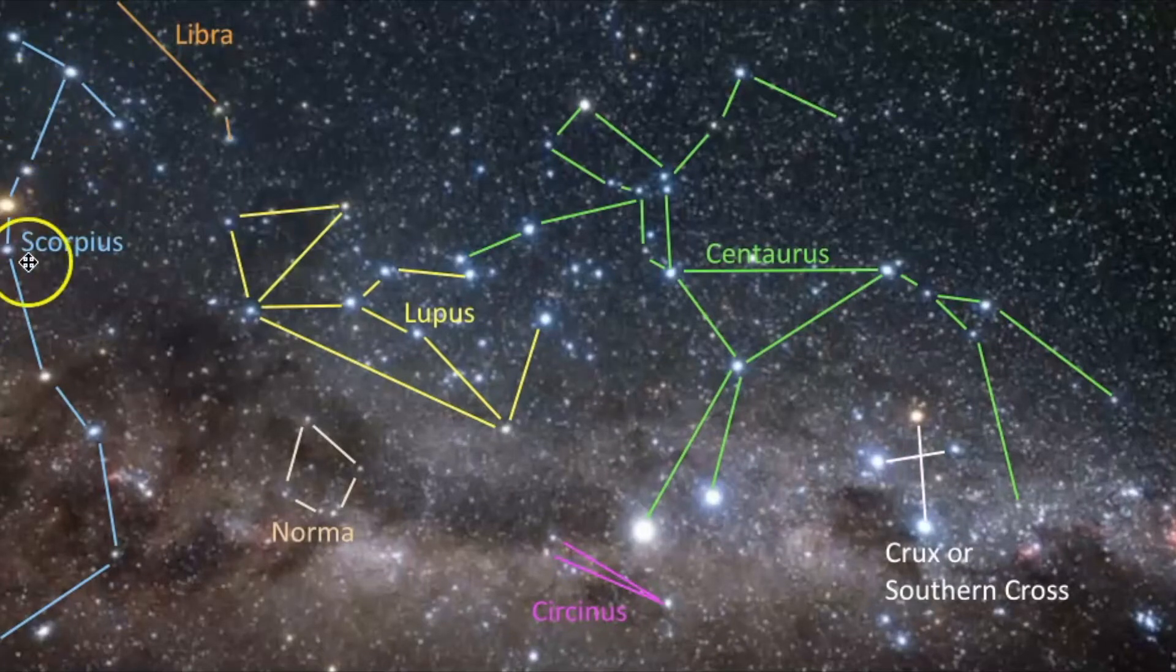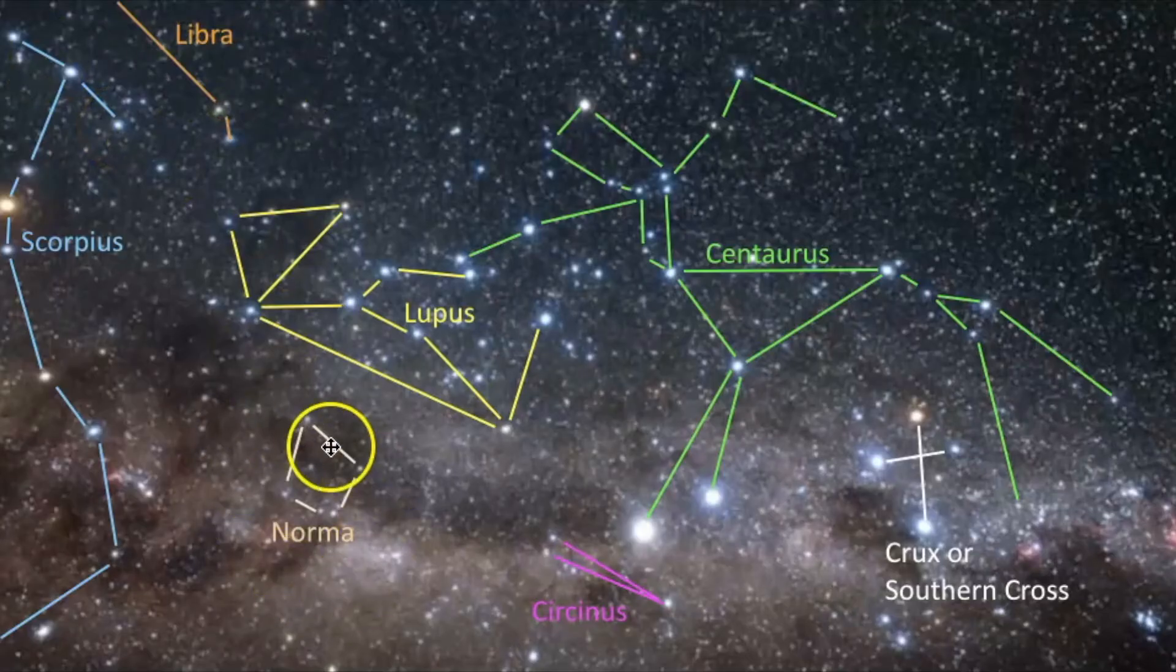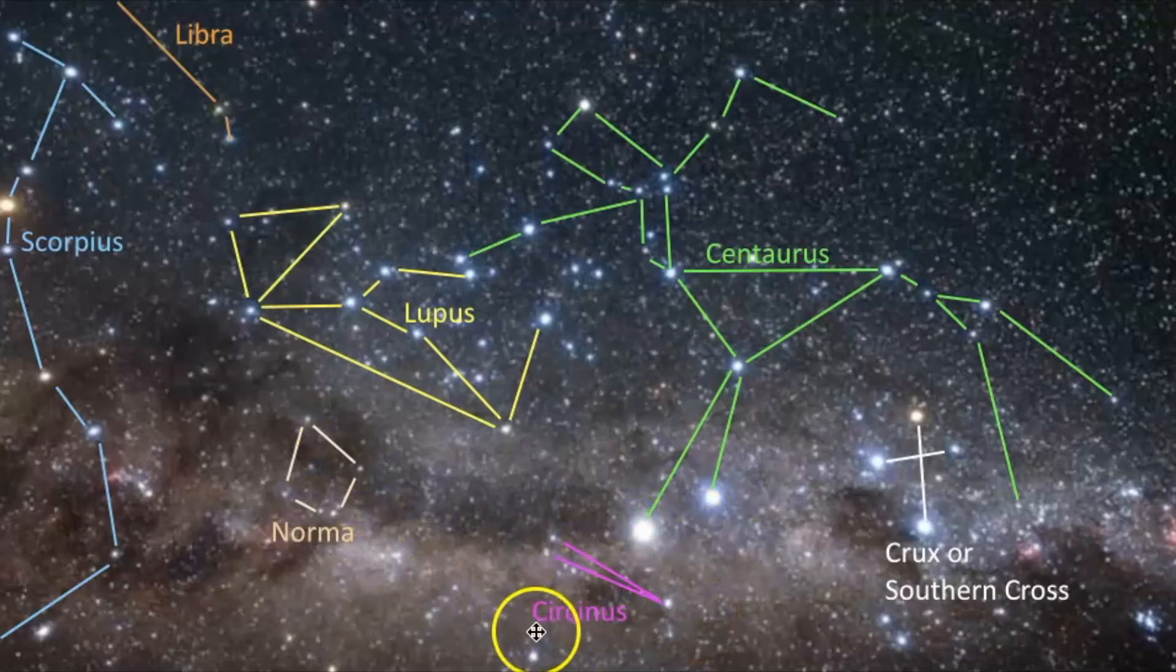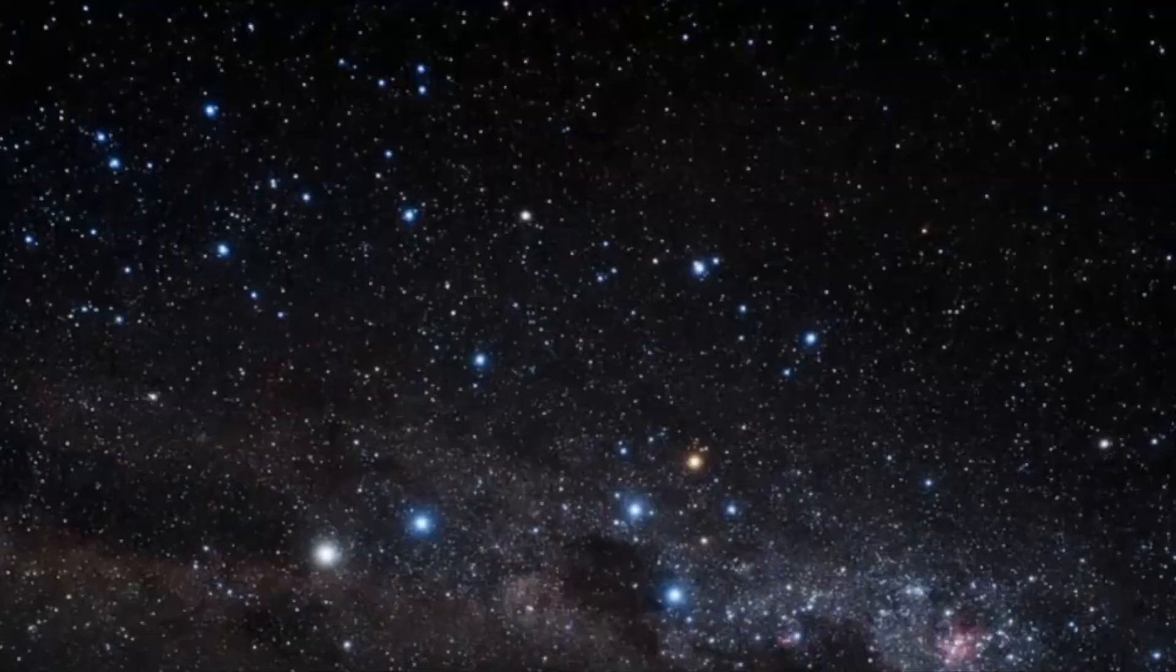But here we have Centaurus in green. We have Lupus in yellow. I definitely am very familiar with Scorpius. It's one of my favorite constellations. I've got a video on it, go see it. You can see a portion of Libra. You have Norma, this one right, Circinus, I'm not even sure how to say that. And then we have the Southern Cross. So even though I have a whole channel about the constellations, there's still a lot I need to learn. And that starts with the journey to the Southern skies, which is hopefully in my five year plan.